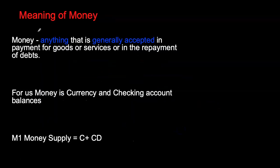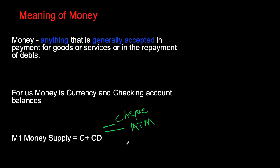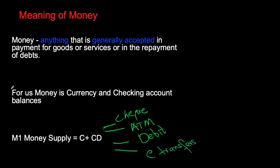Checkable deposits are typically held at a bank — you deposit your money and can use that deposit as a means of payment. These checking account balances have seen an evolution in how they can be used. Initially you could only use your checking account by writing a check for payment of goods and services. Then money could be withdrawn with ATM cards. Over time we saw further evolution with debit cards, and more recently e-transfers or e-payments, where you can use an app on your phone to immediately transfer money from your checking account.